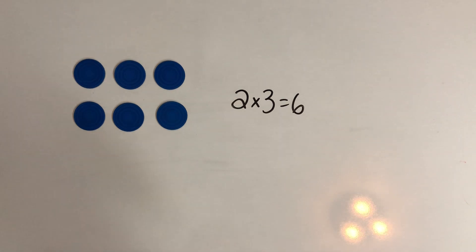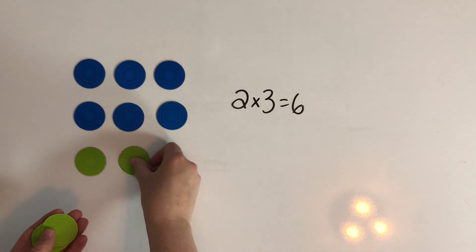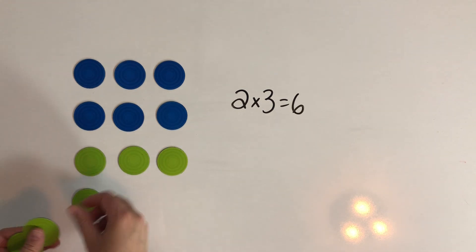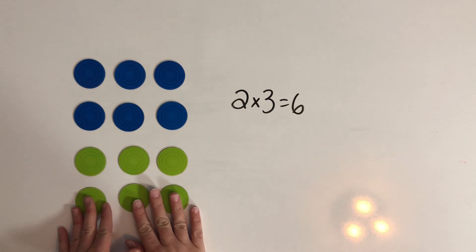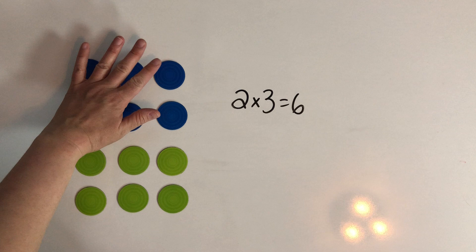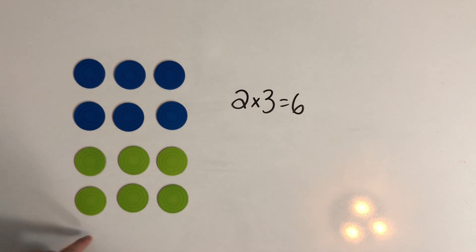Now what happens if we double the amount of rows in our array? So we had two rows and now we have four rows, so we doubled the amount of rows.